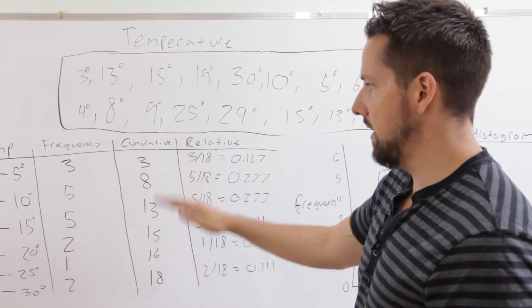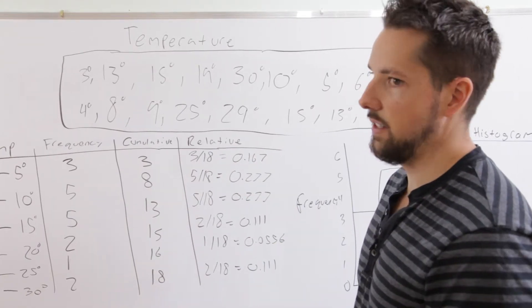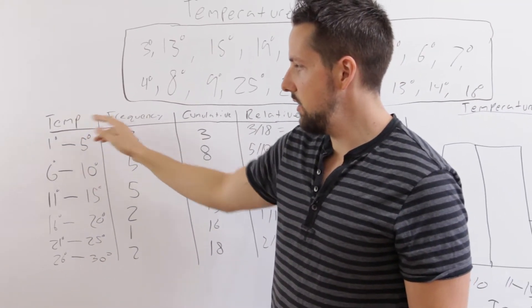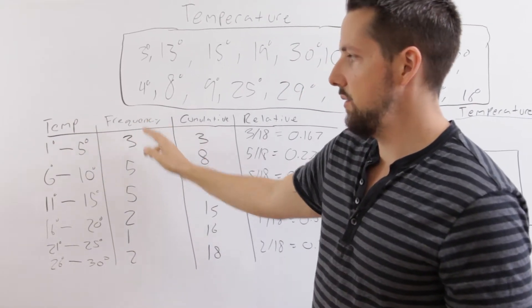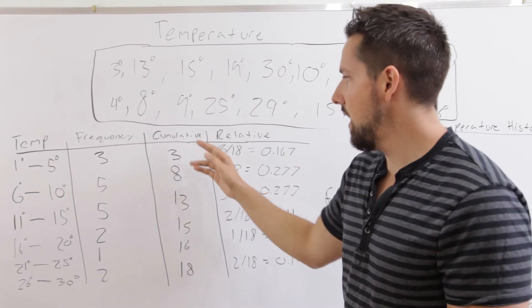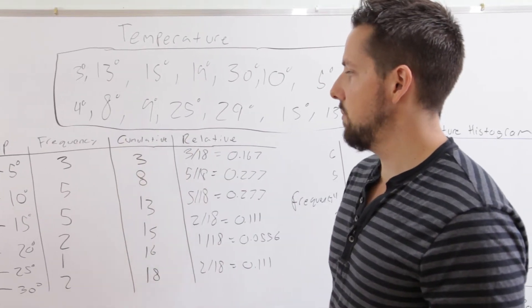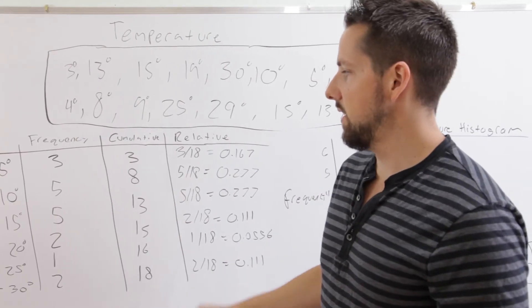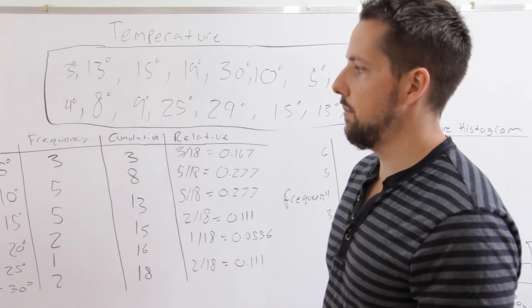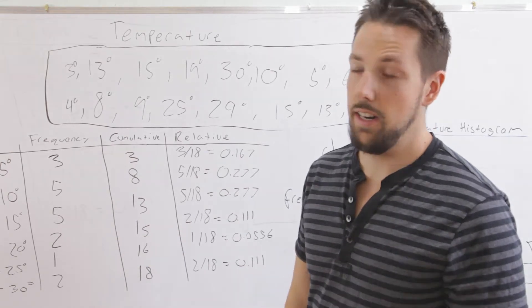We have all the data, and now we're going to make our histogram. When you make the histogram, you use only these two. Use the first one, the ranges, the temperature, and use the frequency. You can make graphs out of cumulative and relative frequencies, but those are different ones. They're called frequency polygons. It's basically just like a line graph where you put a point at the thing and connect it. But for now, we're going to focus on histograms.